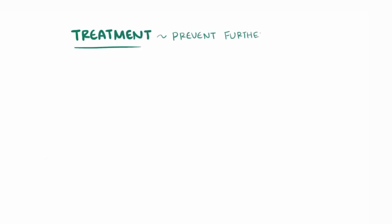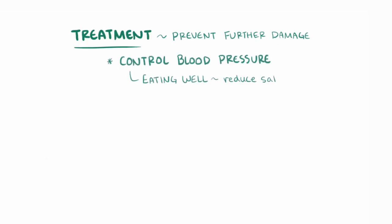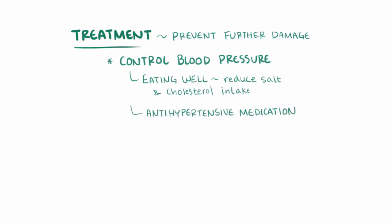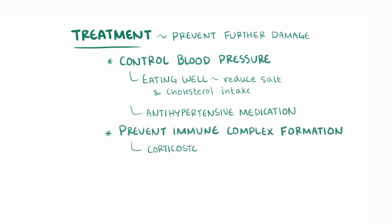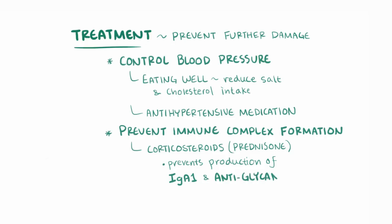Once the kidneys have been scarred, they can't be repaired, so treatment is mainly focused on preventing further damage and avoiding end-stage kidney disease. Controlling blood pressure can help, by eating well and reducing salt and cholesterol intake, as well as by taking specific antihypertensive medication. Preventing the formation of immune complexes can help as well — taking corticosteroids, like prednisone, can prevent an individual's immune system from making both the defective IgA1 as well as the antiglycan IgG, which bind together to form the immune complexes.